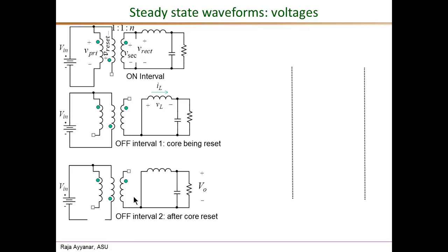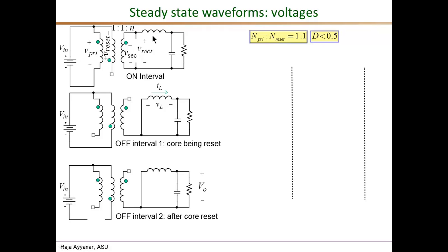One off interval is when the core is being reset, and the other is when the core is completely reset. All the waveforms in this video correspond to the condition where the number of primary turns equals the number of reset turns — N_primary to N_reset is 1:1. For this condition the maximum duty ratio in steady state is 0.5, so we will analyze cases where D is less than or equal to 0.5. Note that N_secondary can be anything depending on whether we want step up or step down — there is no restriction on N_secondary being equal to N_primary.